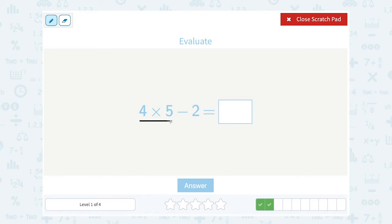So I'm going to start by saying 4 times 5. That gives me 20, and then I can subtract the 2. 20 minus 2 leaves me with 18.